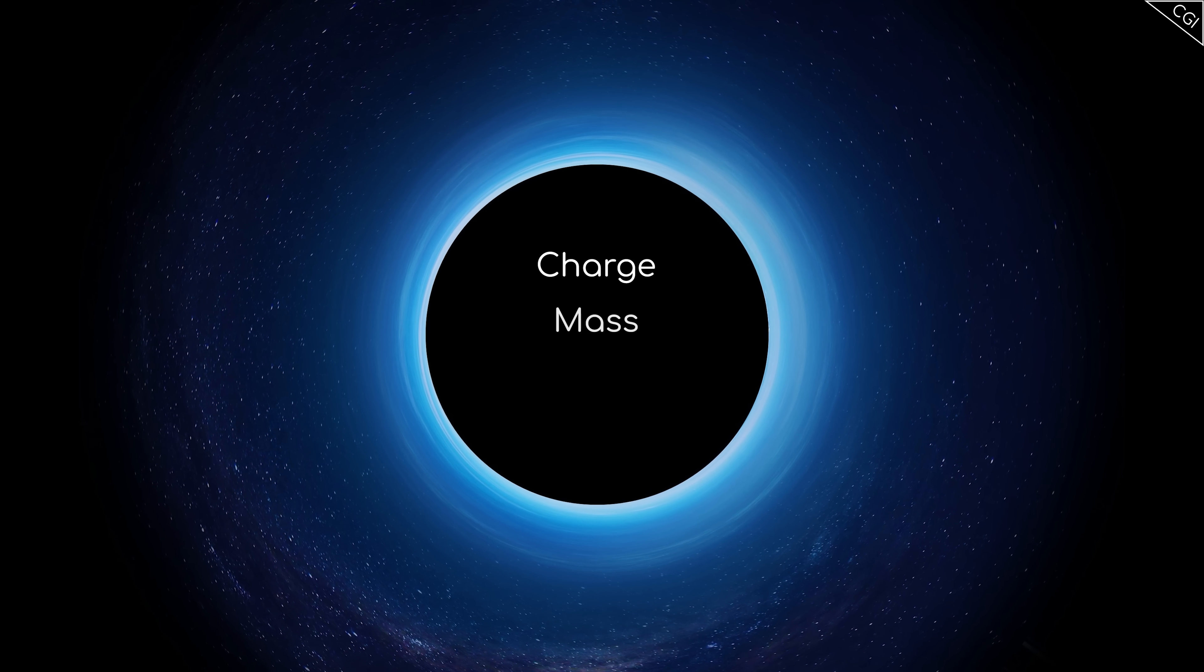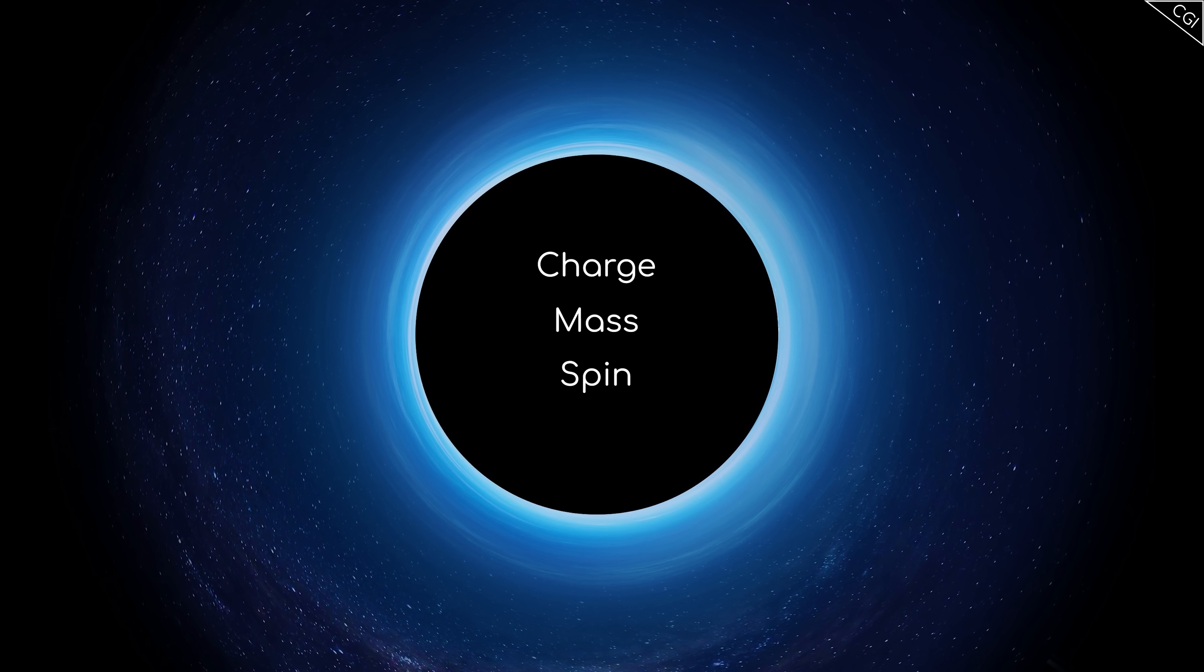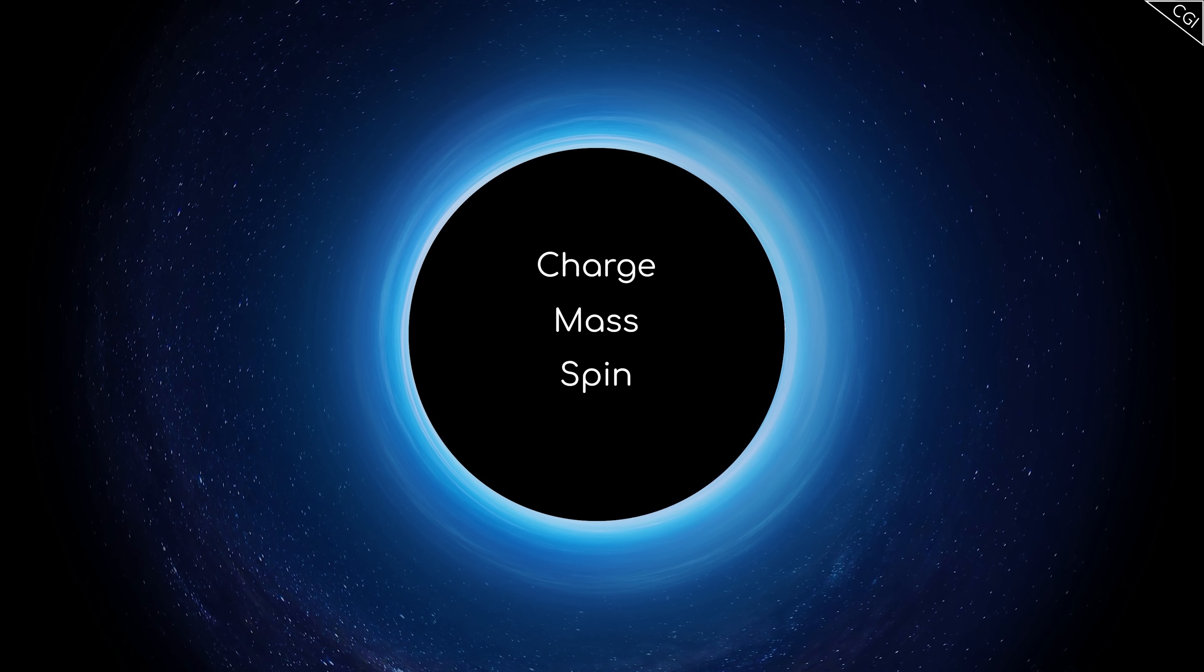The features of a black hole are usually fairly plain too. They have charge, mass and spin, and that's about it. We discussed most of them in my last video, which you can check out here.